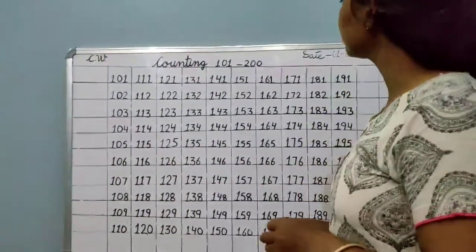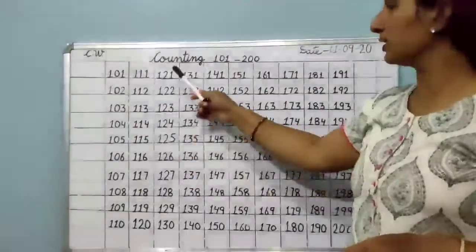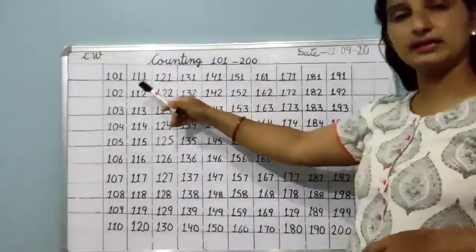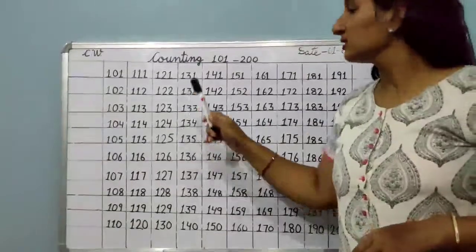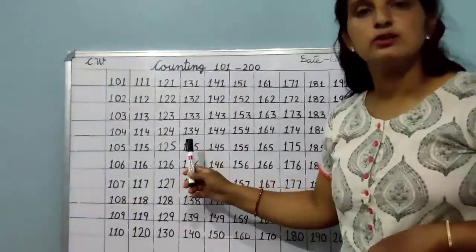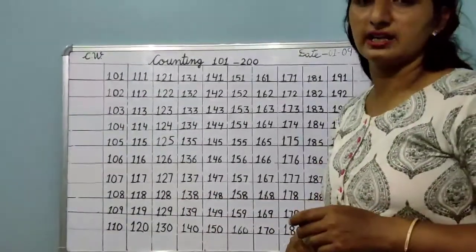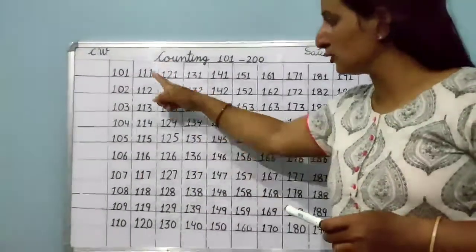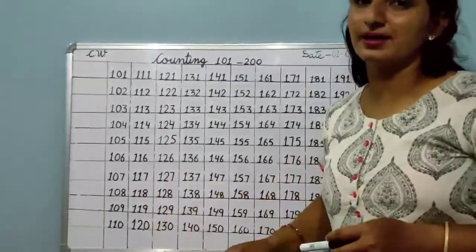Okay students. So you are to write counting 101 to 200 like this. And when you write these numbers, this counting, you will speak as well. You have to speak while writing the numbers. Okay? Bye-bye.